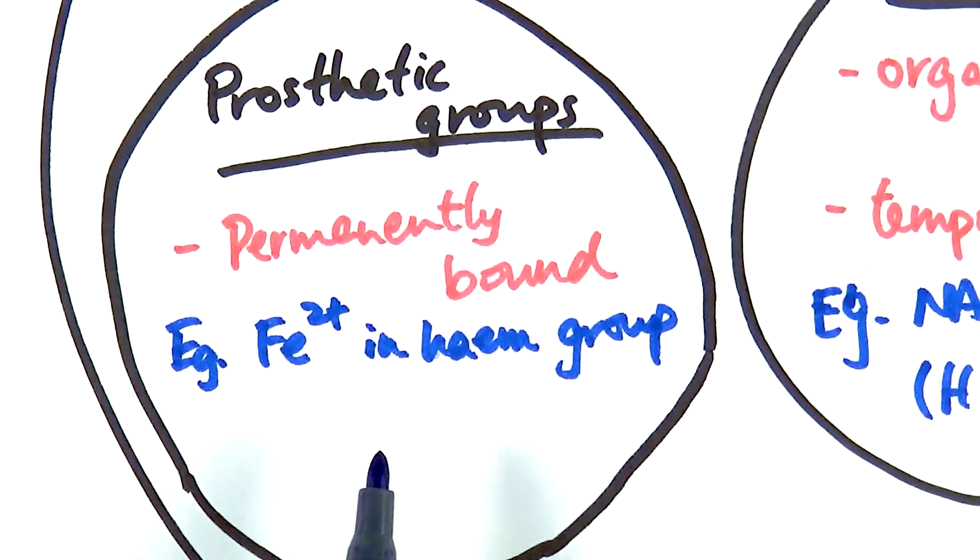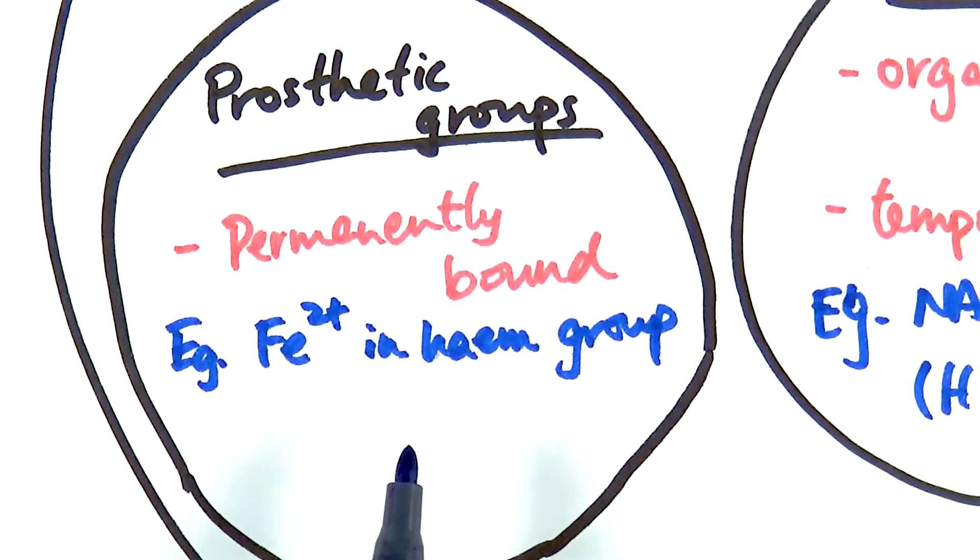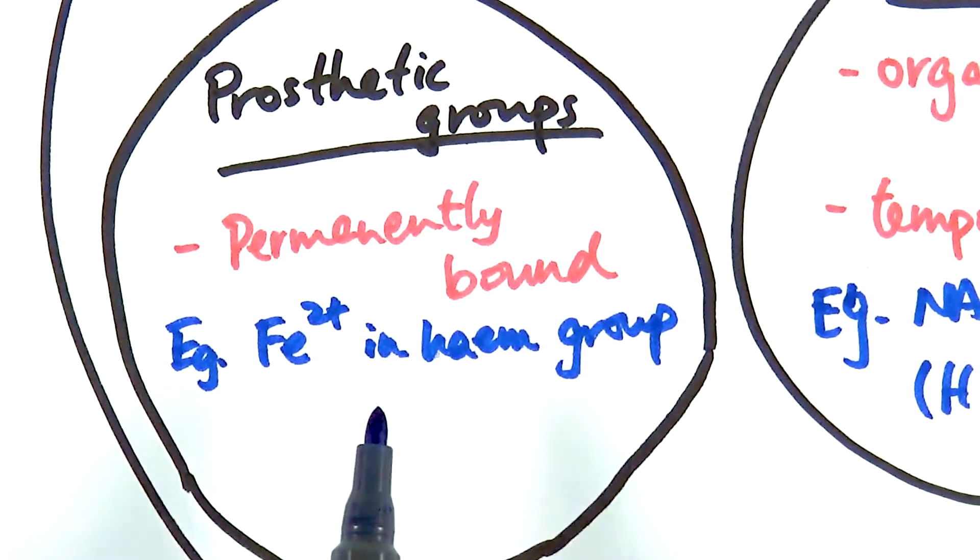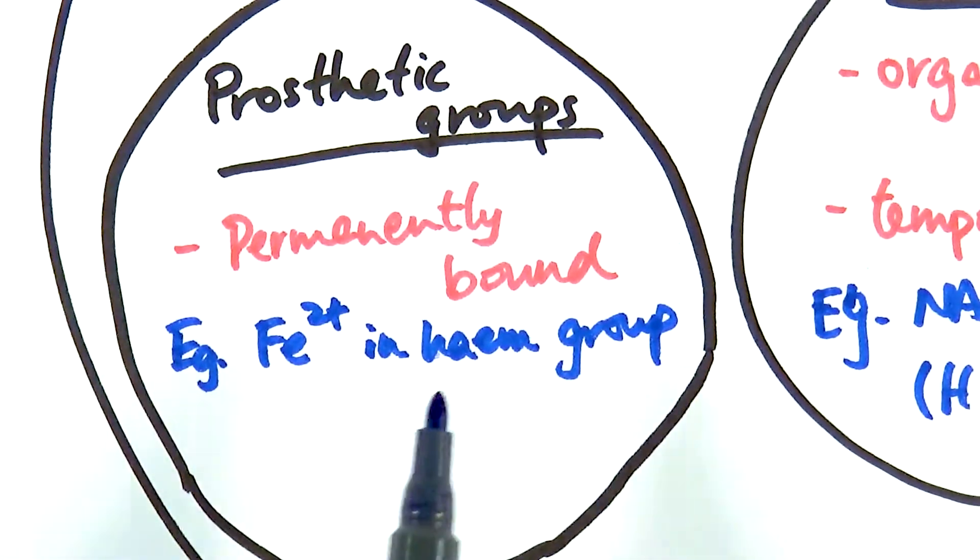A hemoglobin is a globular and conjugated protein because it's got a prosthetic group bound to it, which is inorganic, which is bound to the organic protein itself.